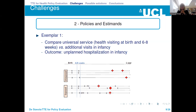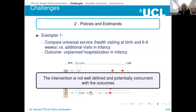It's obvious that this is an example of a complex policy, because there isn't a clear definition of what the intervention is. It could be additional visits within the first six months, could be spread out, could be regular. There isn't a written policy that we can refer to. This is a case where the intervention is not well defined, and the other complication is that the outcome may be concurrent with the intervention — the outcome may lead to more visits from the health visitor.